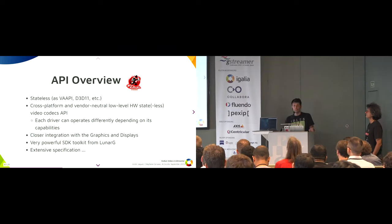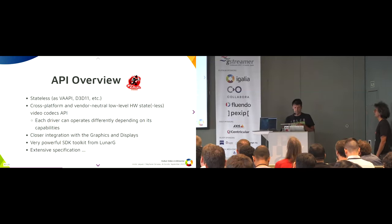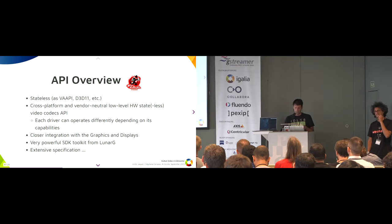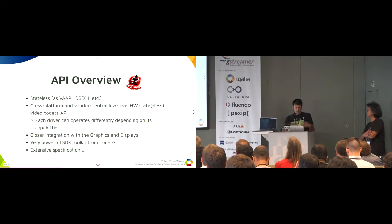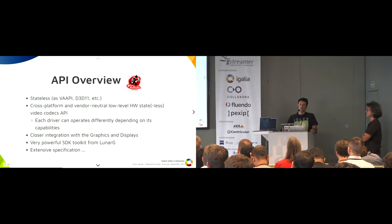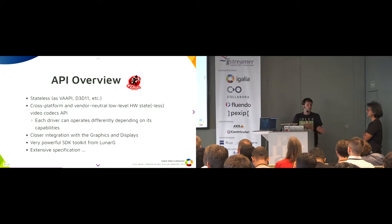The API overview of Vulkan Video is definitely stateless, like VA-API or D3D. All the complexity of managing the stream is done by the application, and decoding and encoding is done by the hardware and driver. It's cross-platform and vendor-neutral, but it can also be fine-tuned by capabilities. The driver exposes capabilities and we adapt how the application interacts with the driver. For example with decode H.264, the decode picture buffer in AMD is different from NVIDIA, so you have to manage it differently — and you know this via capabilities.